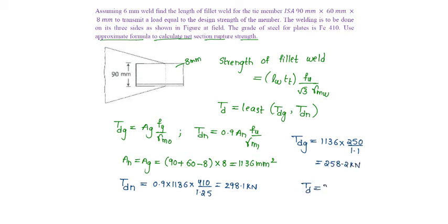So TD will be equal to least of both, i.e., 258.2 kN. Equating this to strength of weld, given size of weld is 6 mm, so 258.2 kN times 10 to the power 3 in N will be equal to length of the weld into throat thickness.